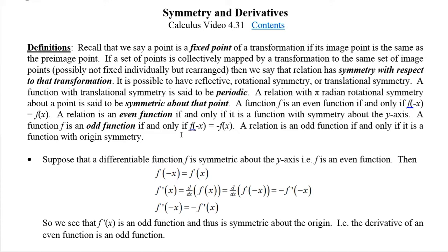Suppose we have a differentiable function that's symmetric about the y-axis — in other words, it has to be an even function. Then f of minus x equals f of x. It turns out the derivative of f of x is f prime of x, and we've seen that's the same as the derivative of f of minus x, which gives minus f prime of negative x. So f prime of minus x is the opposite of f prime of x, meaning the derivative is an odd function.